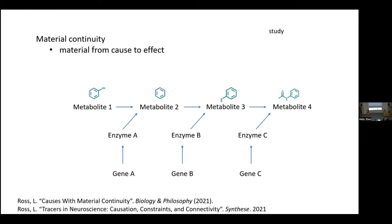Scientists have realized that some causal systems have the feature of material continuity and they exploit it in studying them. One way is by introducing a tag or tracer into the material at the very beginning and following it through the sequence of causal steps — radioactive tracers in metabolic pathways, dyes in neural pathways and ecological pathways. If you're studying a causal process that doesn't have this feature, this method is not available. So these causal types matter for the methods scientists use to study causal systems.